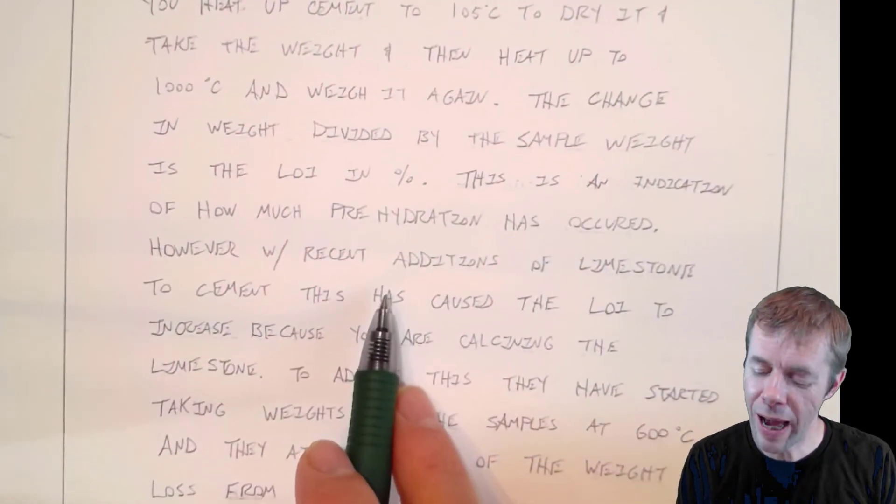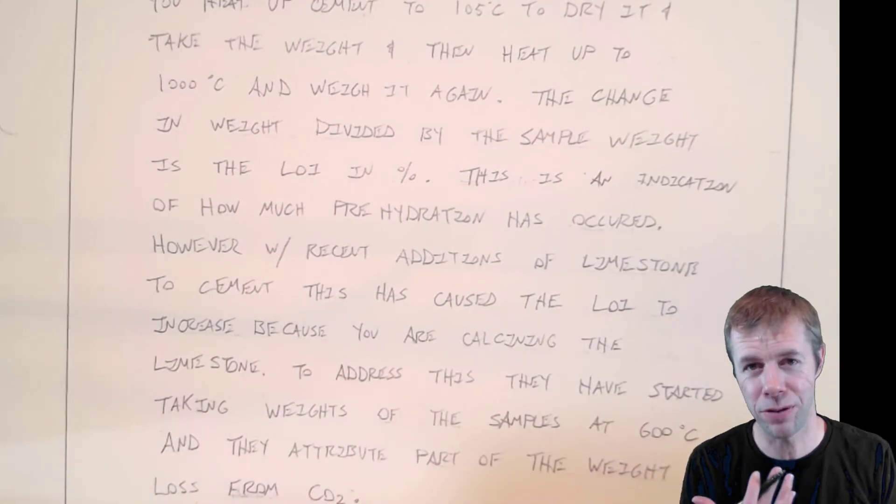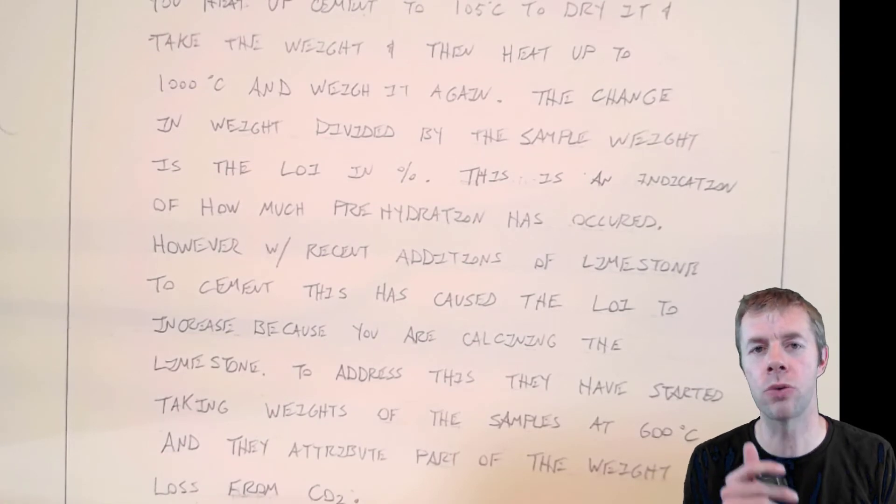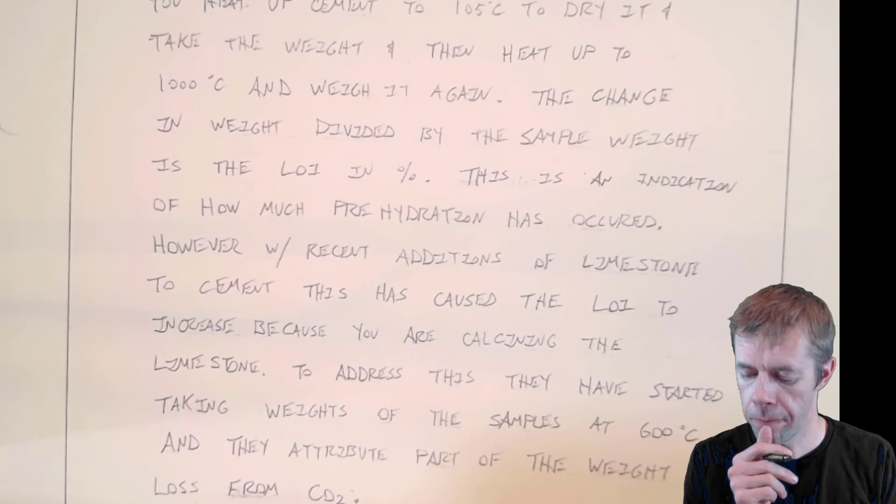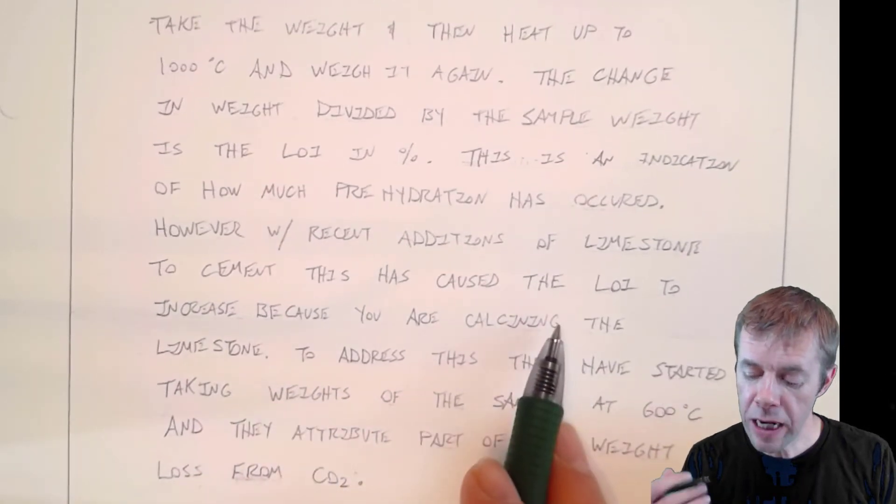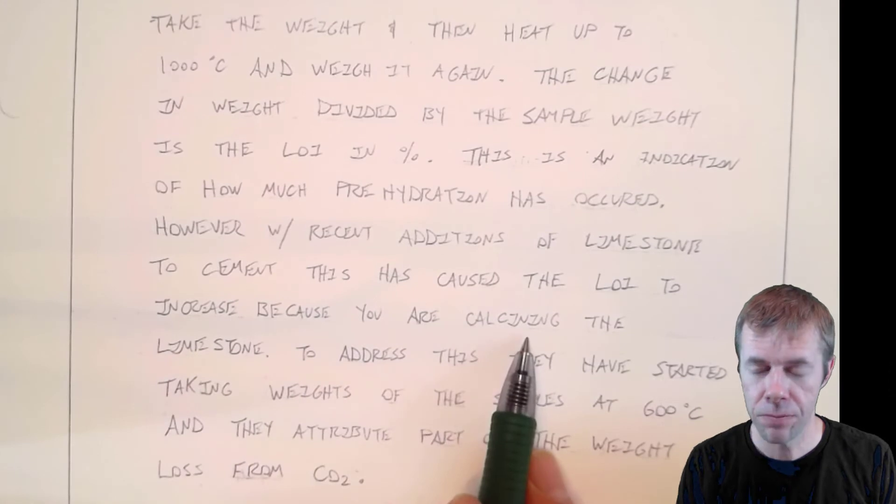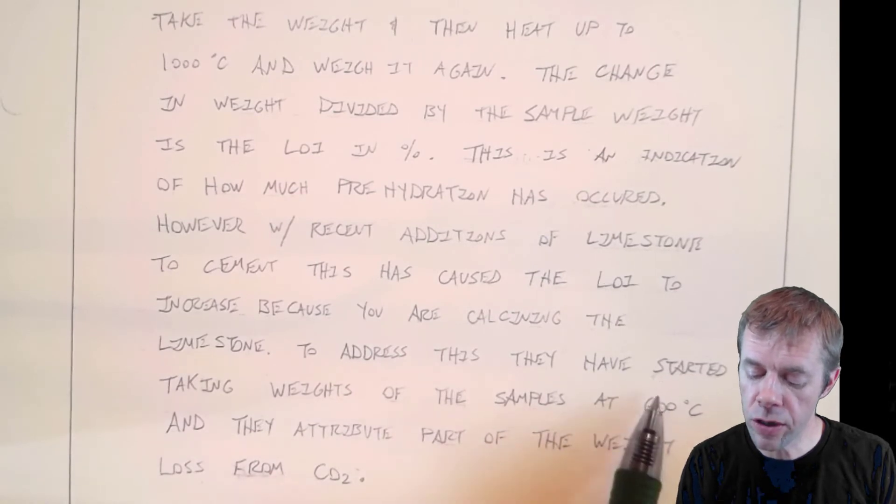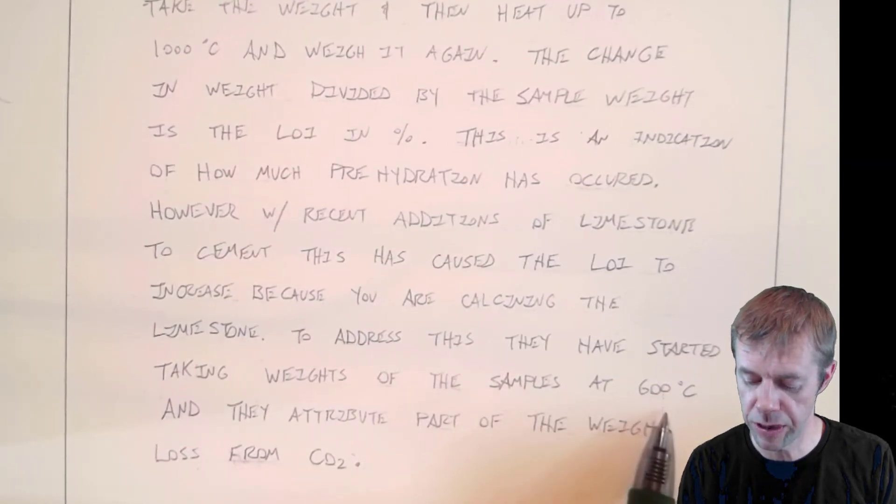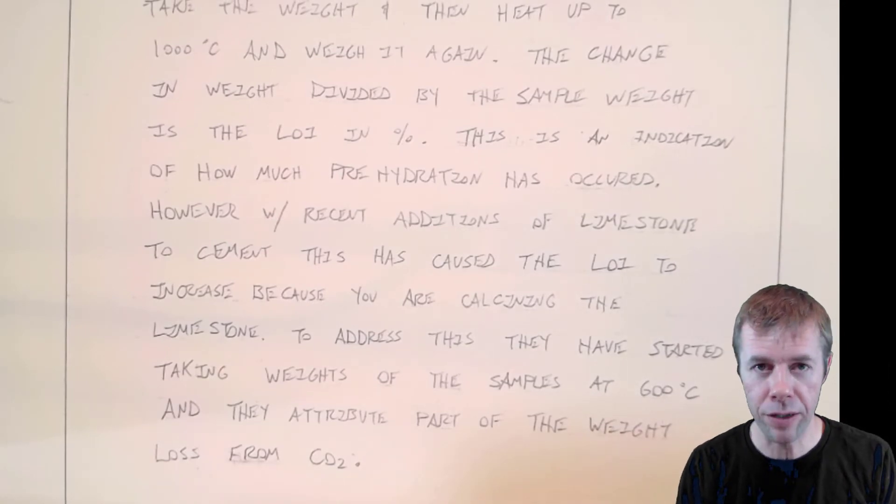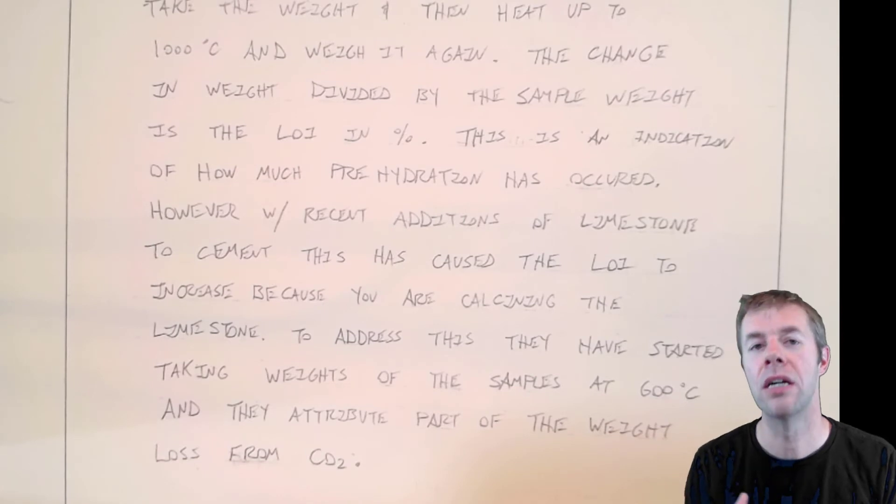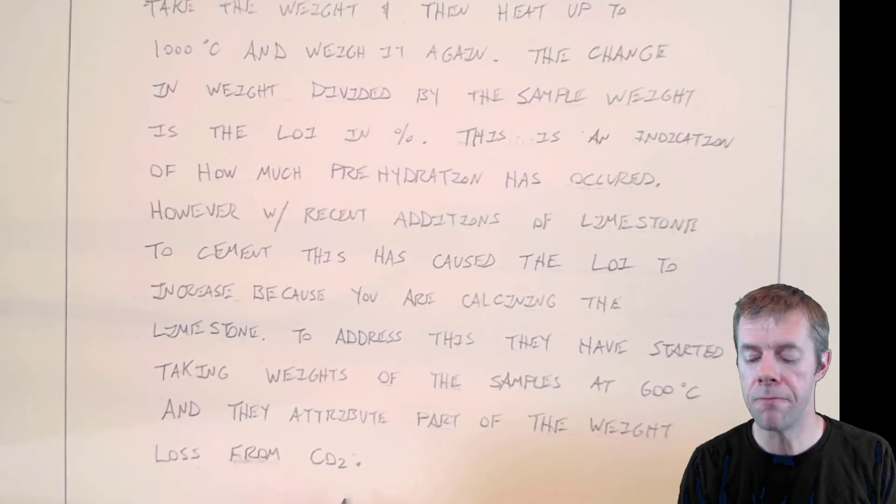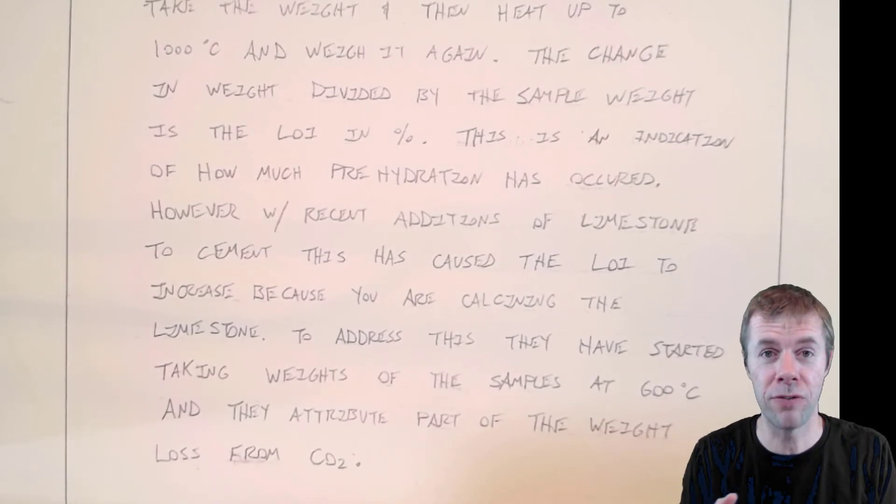However, now that people have started to add limestone, the limestone is going to combust as well. Remember, the limestone is not with the clinker. The limestone is ground afterwards with the gypsum and the clinker. When you heat up the limestone, you're actually calcining it, burning off the CO2. To address this, they've started taking weights of samples at 600 degrees Celsius. They attribute part of the weight loss between 600 C and 1,000 C to the CO2, but this is still being worked on right now.